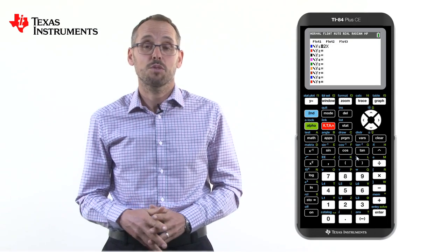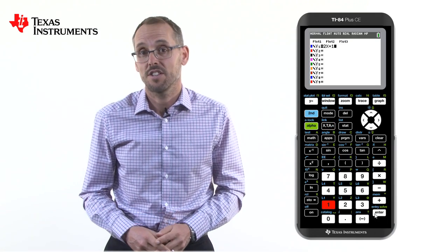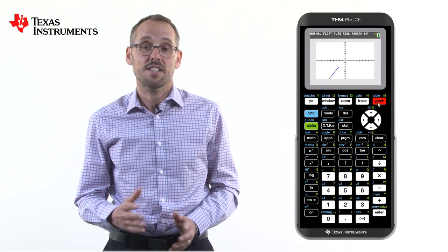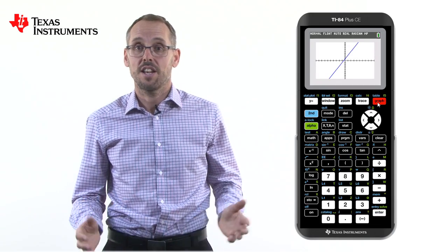So 2x plus 1 produces this equation and then, by pressing the graph button, produces this fantastic blue linear line.